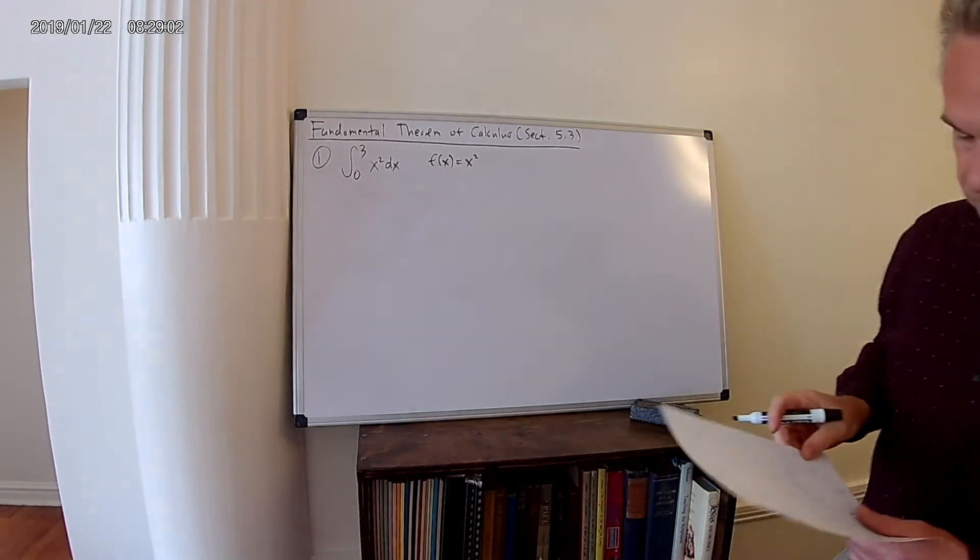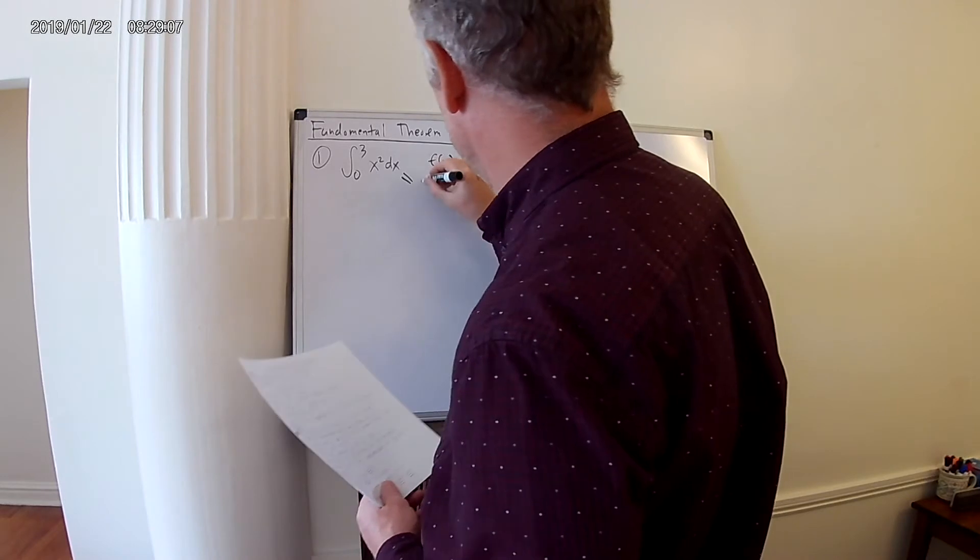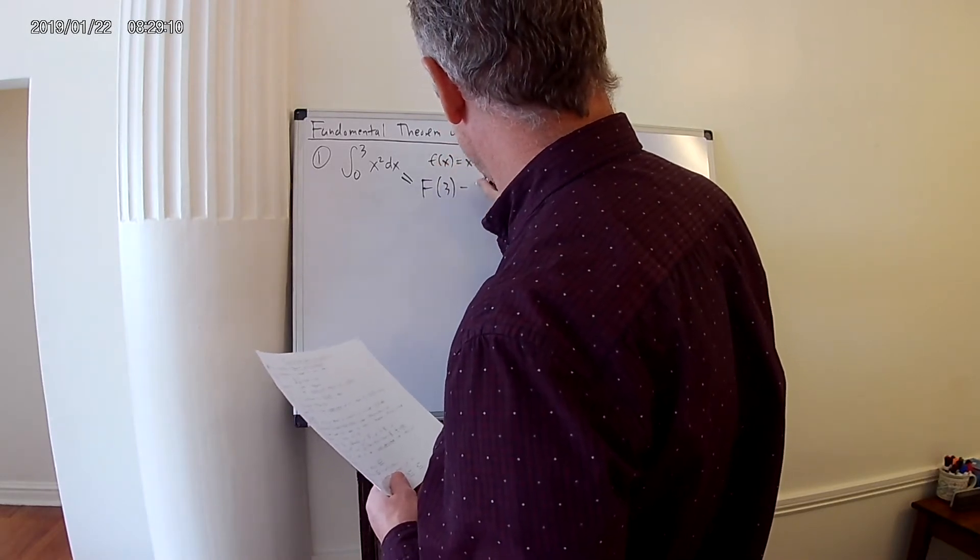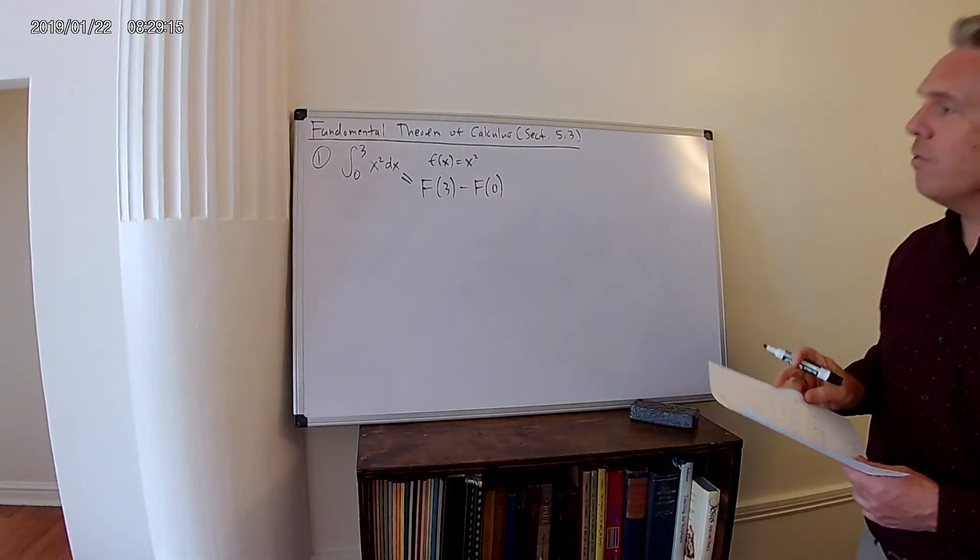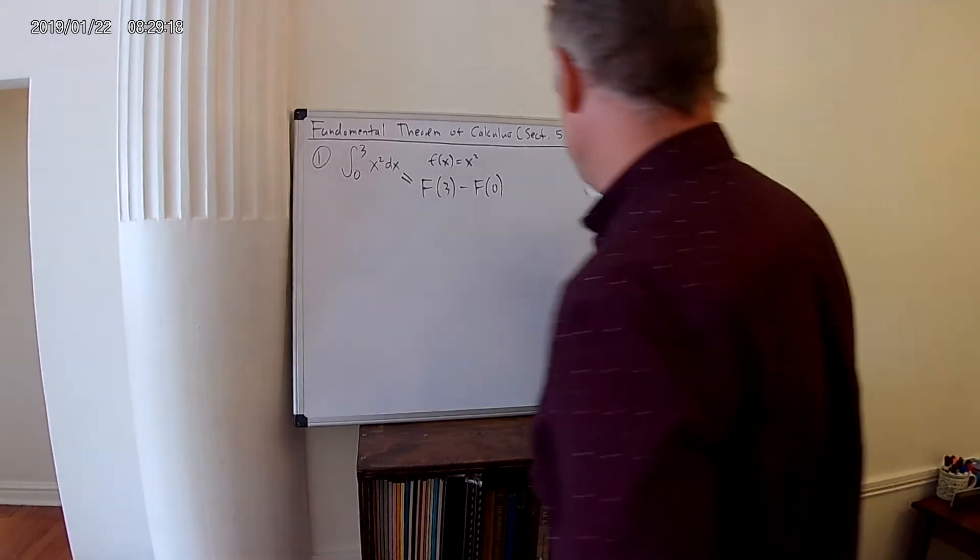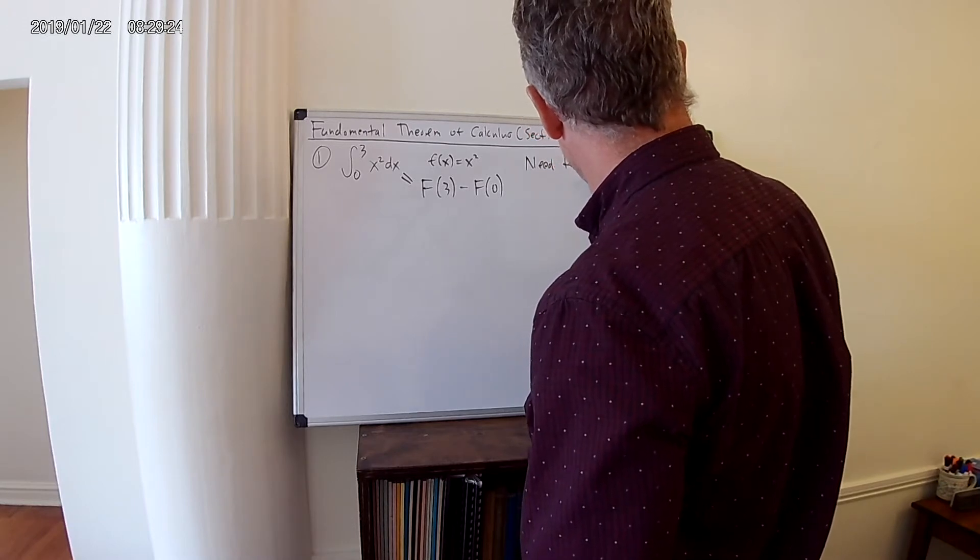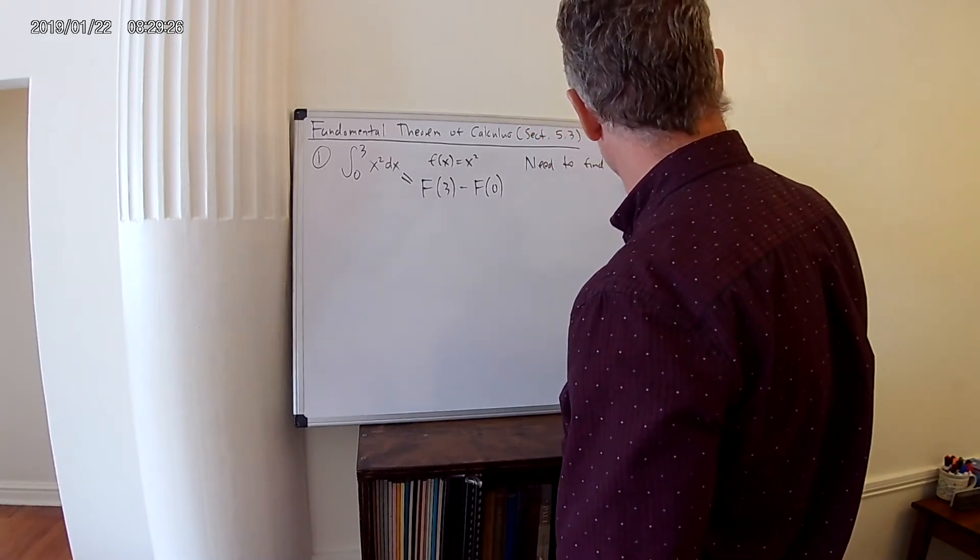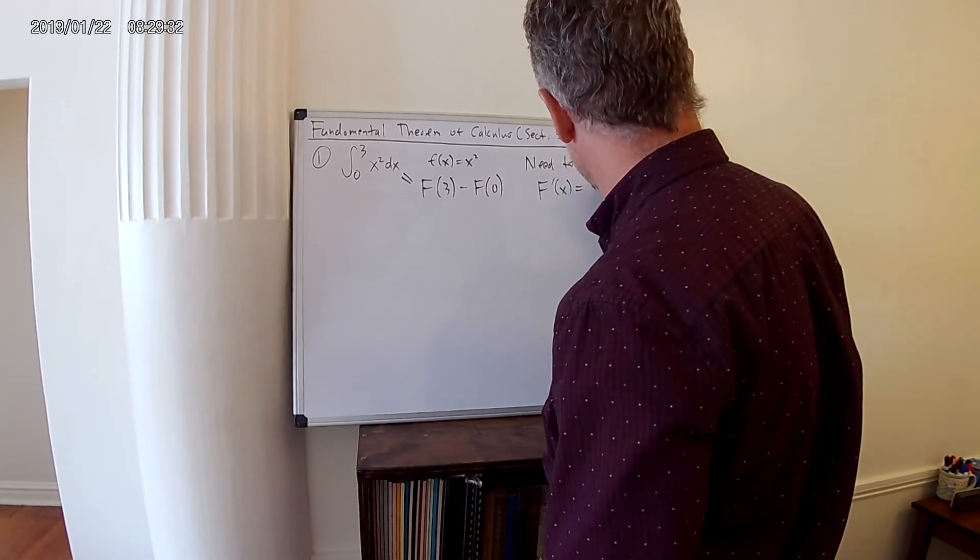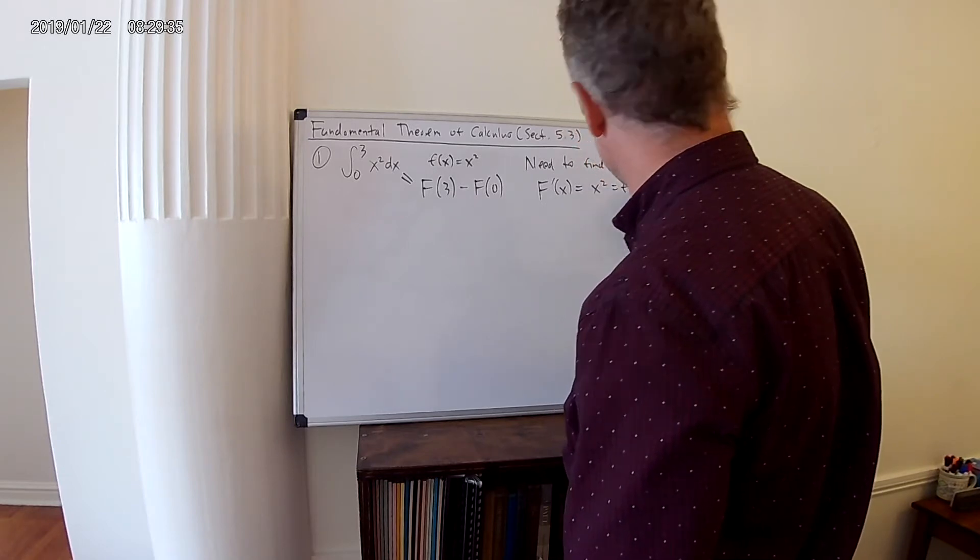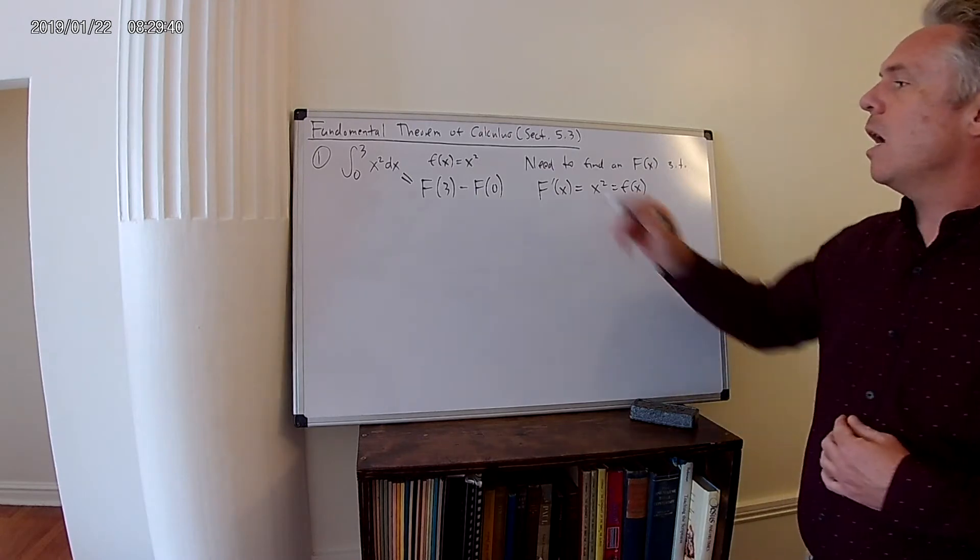I want to find the area under this parabola from 0 to 3. By the fundamental theorem of calculus, this equals capital F(3) minus capital F(0). And now the trick is, I need to find a function, an F(x), such that the derivative of capital F(x) equals x squared, which is my original function under the integral sign. So I need to find the antiderivative of x squared.